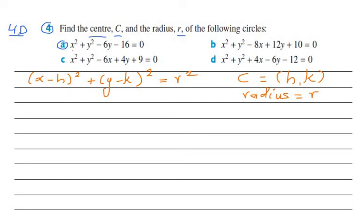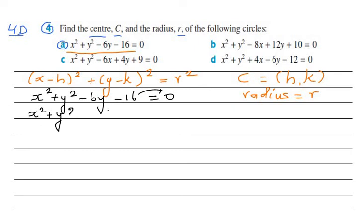Let's see whether we can write this in that format. We rewrite this as x² + y² - 6y - 16 = 0. Moving the -16 to the other side gives x² + y² - 6y = 16. I'll leave a gap here for completing the square.